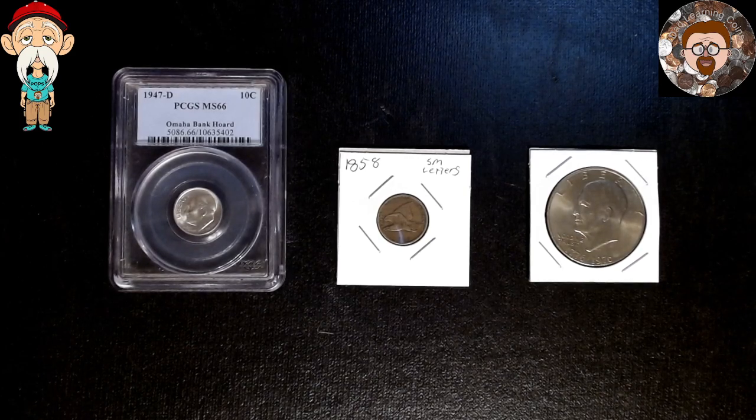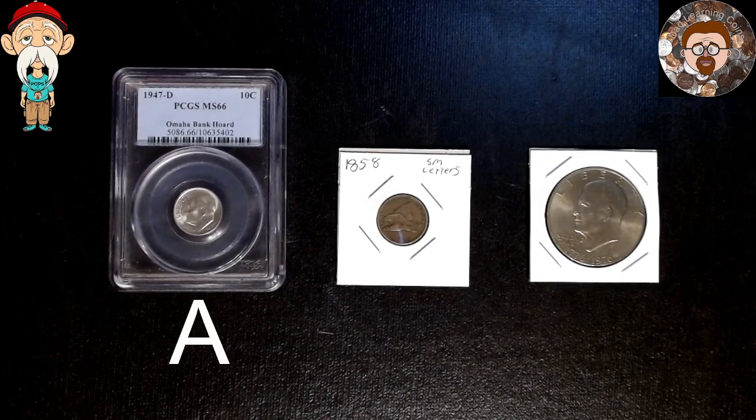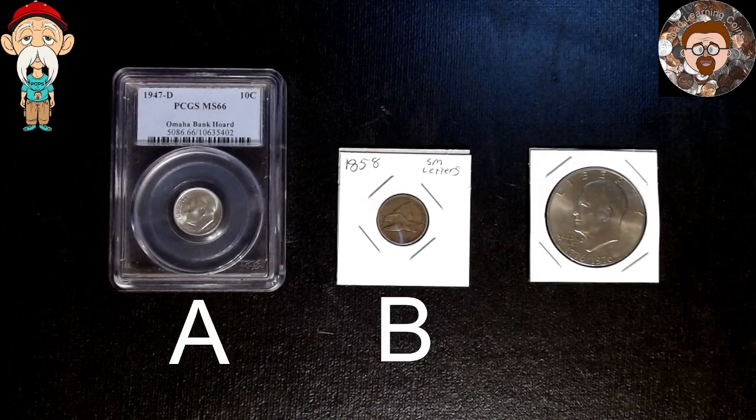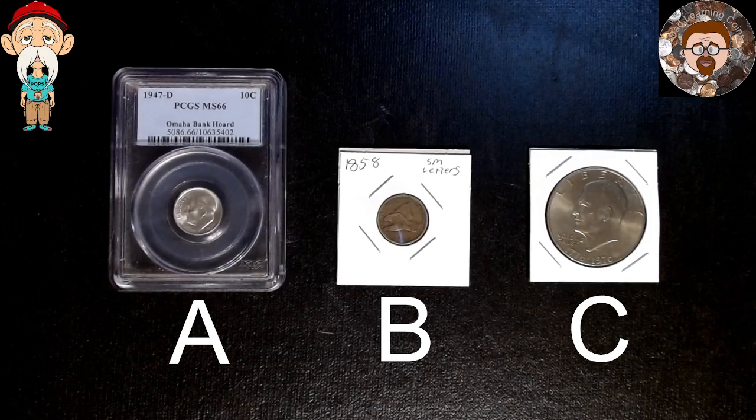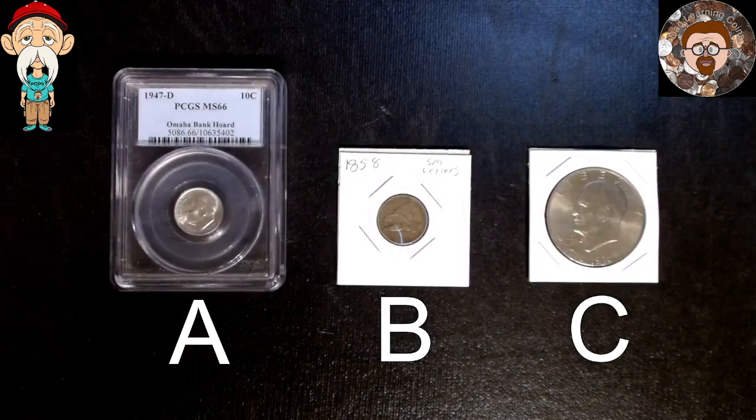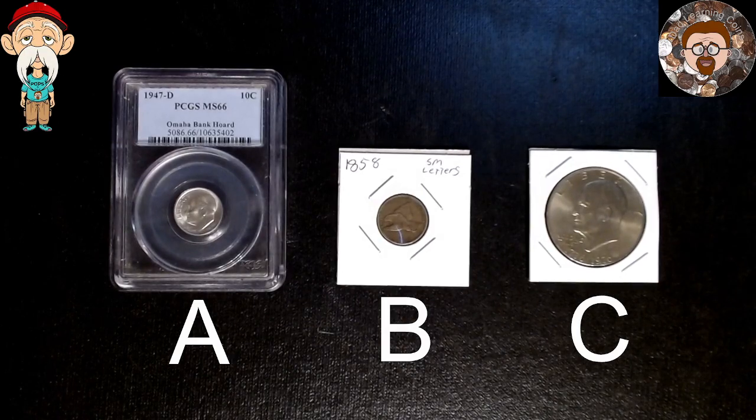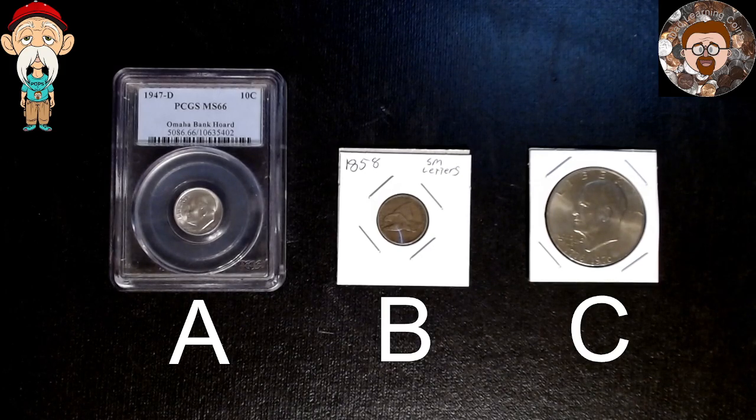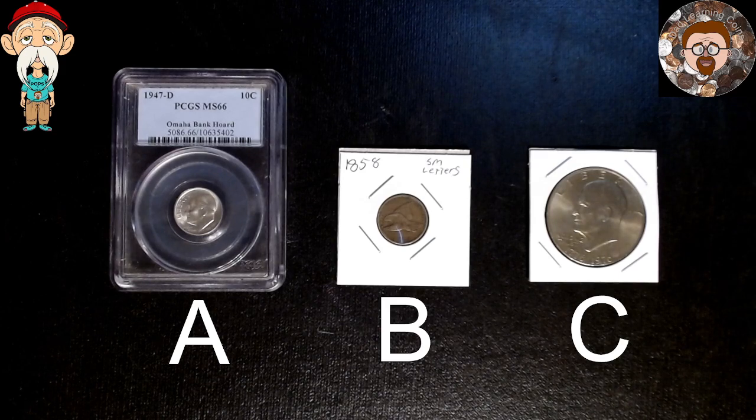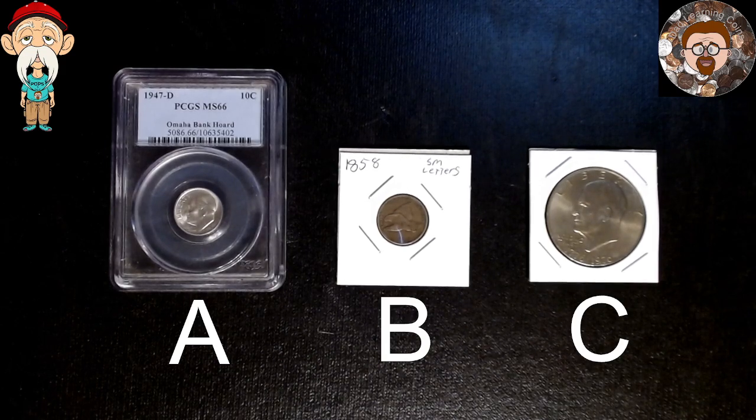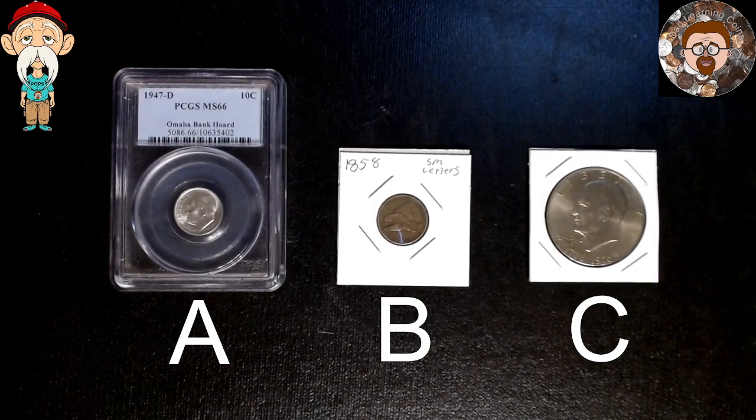It's usually about Saturdays I go over there, so you can vote up until Saturday. A will be the dime, B will be the flying eagle, and C will be the Eisenhower dollar. Please leave your votes in the comments below. On Saturday or Sunday I will do a short on which one wins. Let me know what you think.